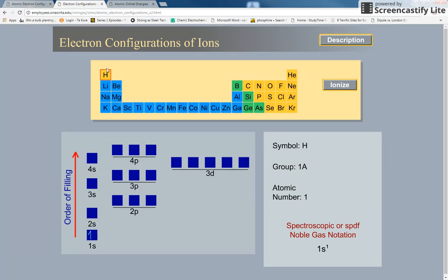So starting off with hydrogen, hydrogen is in group one and only has one electron which goes into the 1s, so its electron configuration is 1s1. When I click on ionize, you can see that electron has gone and it has no electron configuration because it doesn't have any electrons.